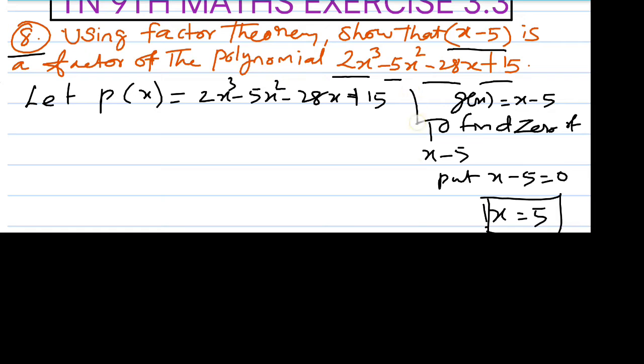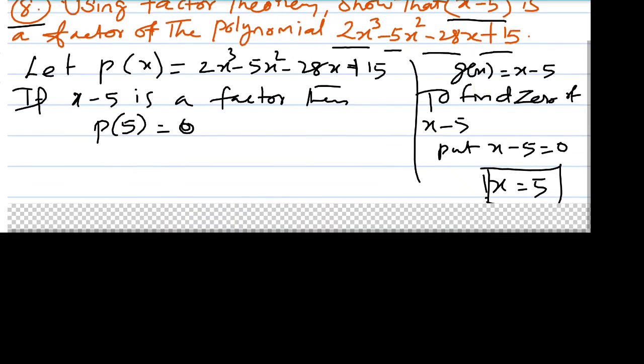Now, if x minus 5 is a factor, then P(5) must equal 0. So let's find the remainder.